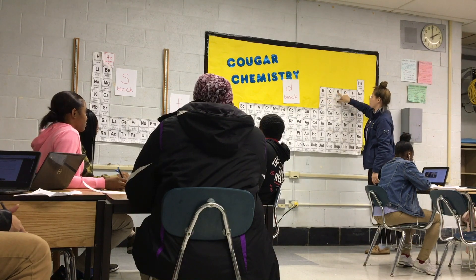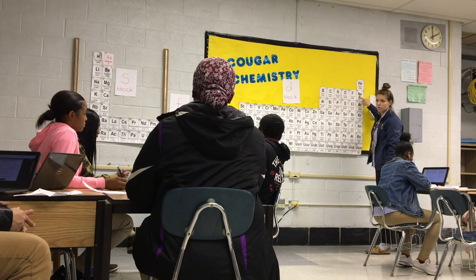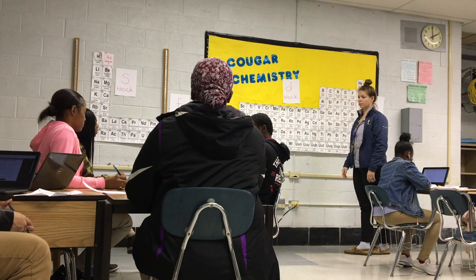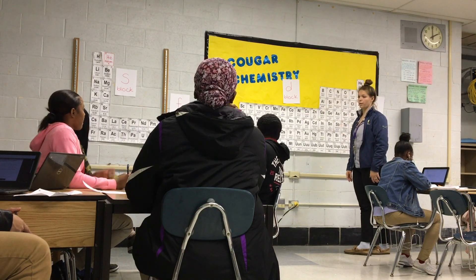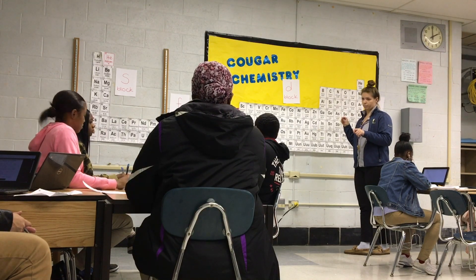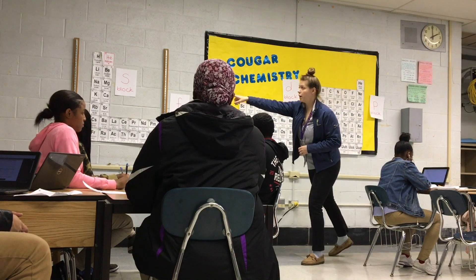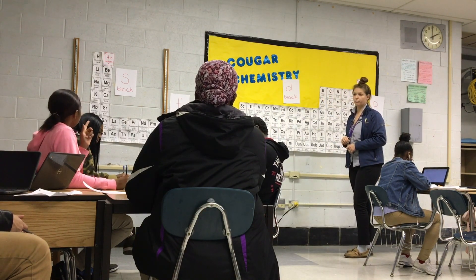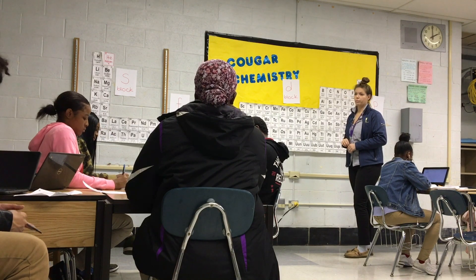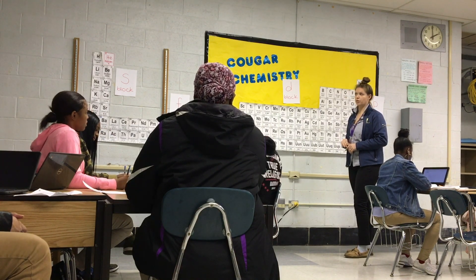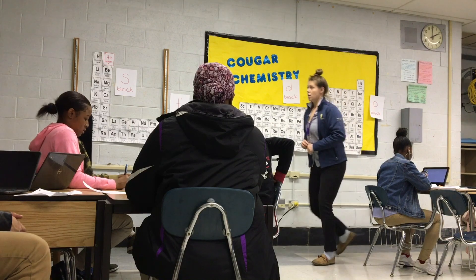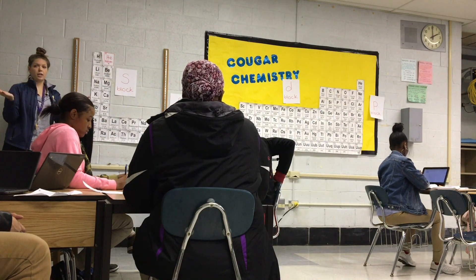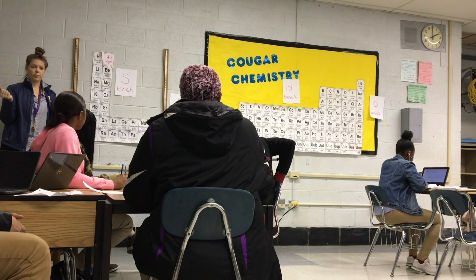We have to go all the way across to the P block, still in the second period. We write P for P block, and there are one, two, three, four, five, six columns. So you're going to write 2S2, and then 2P6. Stop me if you have any questions. After we're done with the P block, are there any other elements in the second period? No.